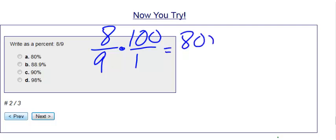8 times 100, I get 800, 9 times 1 is 9, and then I need to divide 9 into 800.